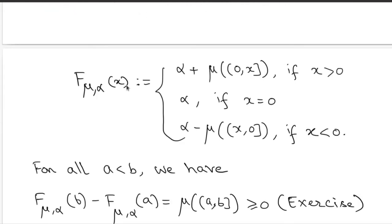The function f_{μ,α} is defined on the real line taking real values. For any x, there are three cases. If x is positive, you look at the interval (0, x] — a bounded interval — compute its measure, and add α. If x equals 0, you assign the value α. If x is negative, you look at the interval (x, 0], compute its measure, and subtract that from α.